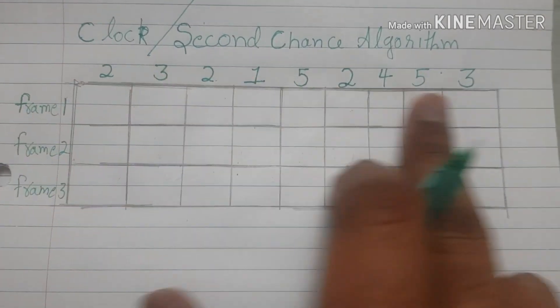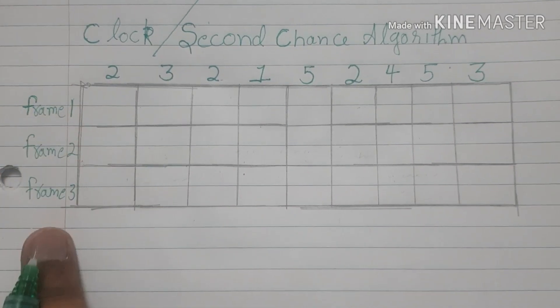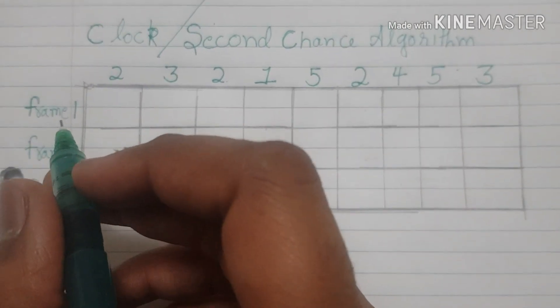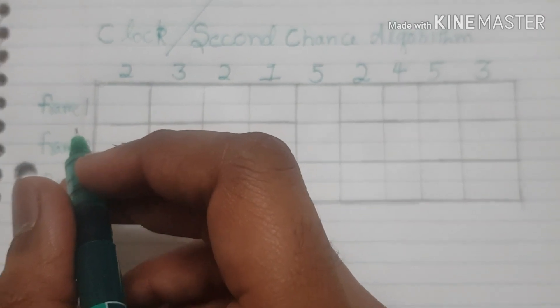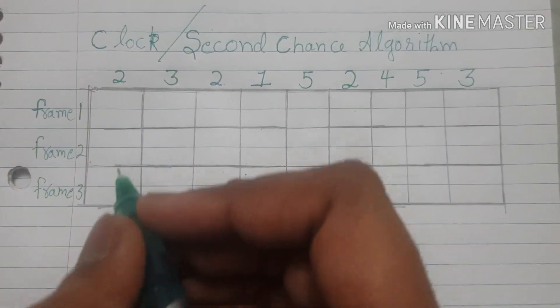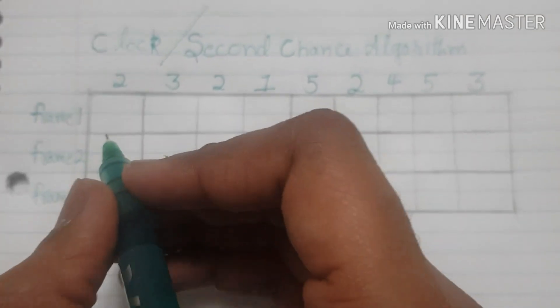Suppose this is the page request string from the CPU and we have three frames available. So as we do in any other page replacement algorithm, we'll start filling out the table. In this algorithm we follow the basic first in first out principle.